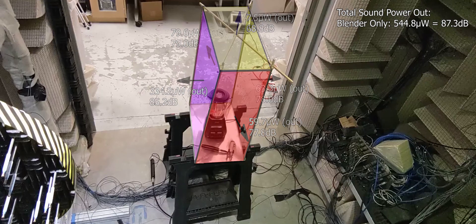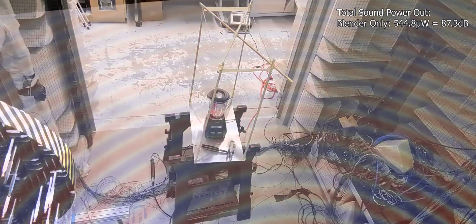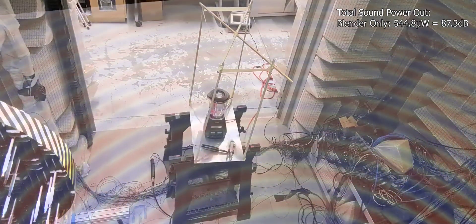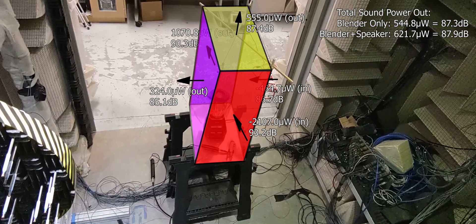The cool part about the sound intensity measurements is that the vector formulation cancels out external sound sources. So if we have another sound source near the blender but outside of the box, we can redo these intensity measurements and we can find the same acoustic intensity even though the sound source was actually louder than the blender.